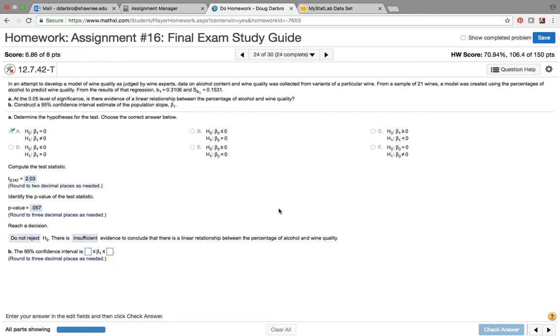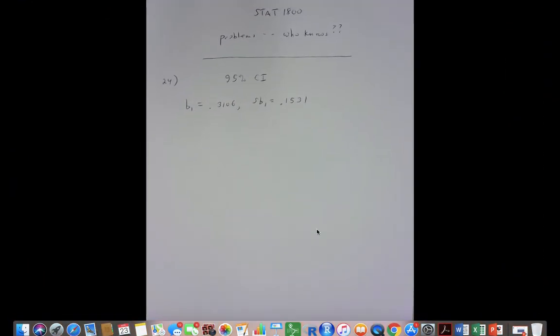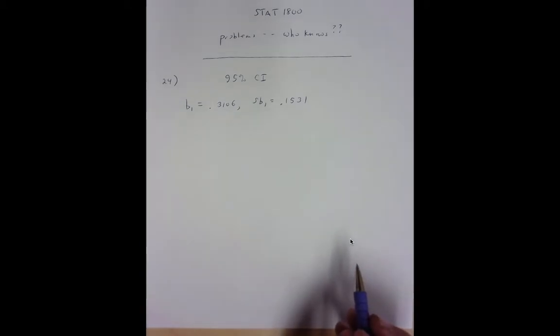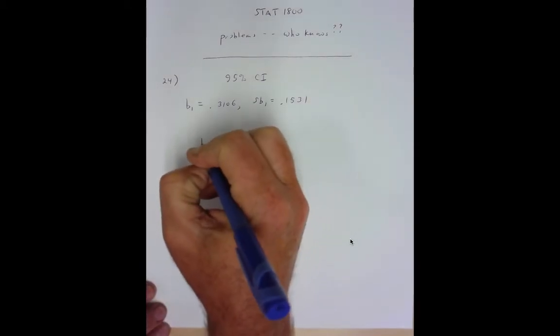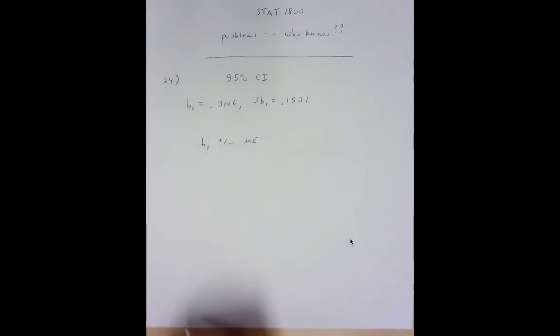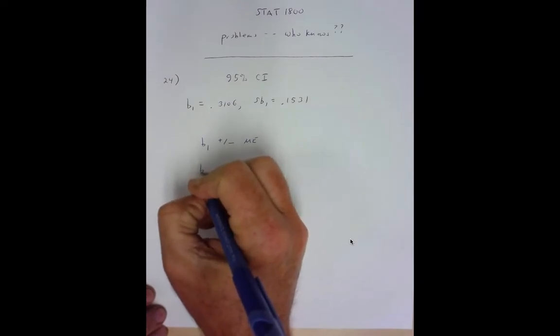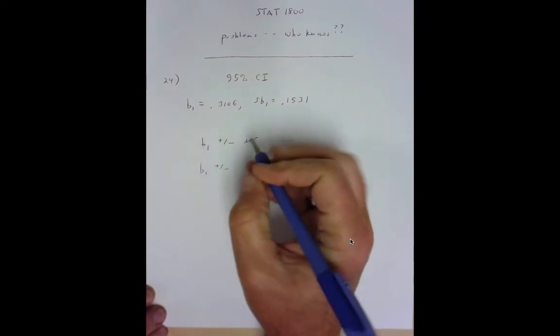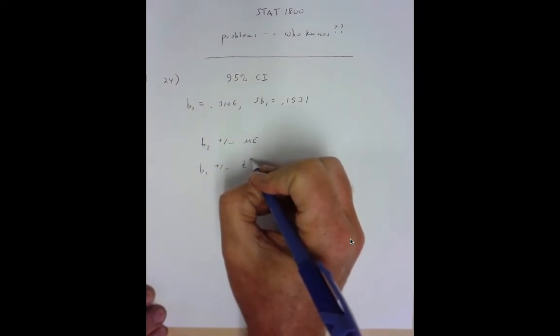Okay, so 95 percent. What happens to get the 95% confidence interval is we take beta 1 and add or subtract margin of error. And the margin of error in these problems is to take the t-critical times the standard error for beta 1.